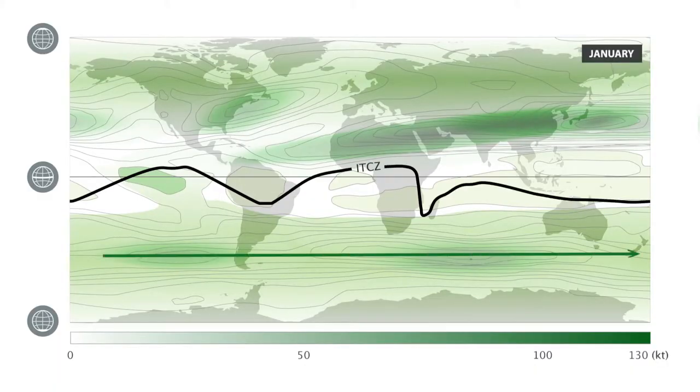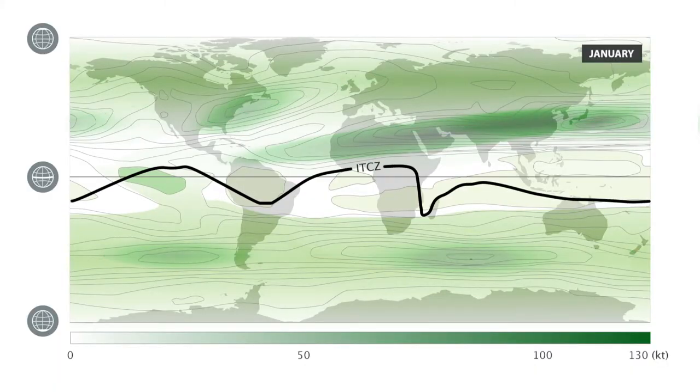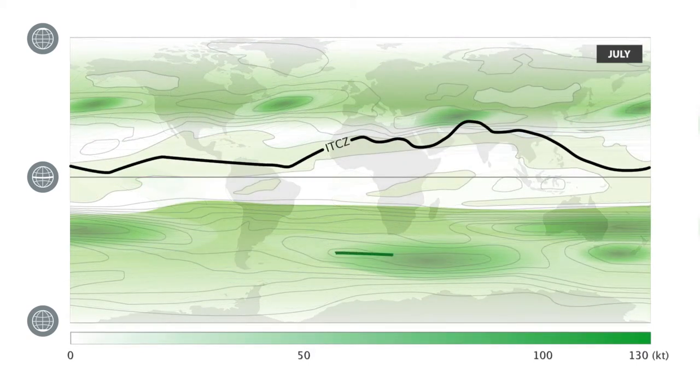The seasonal climatological charts show the average positions of jet streams in the upper troposphere. A jet stream is a very strong tube of wind located towards the top of the troposphere. They have the following general characteristics.